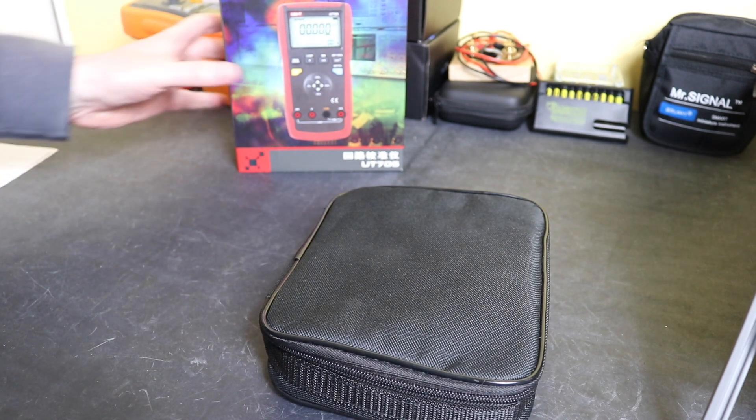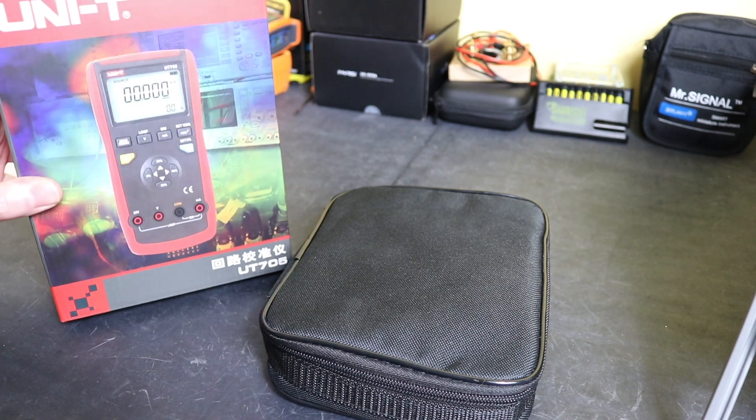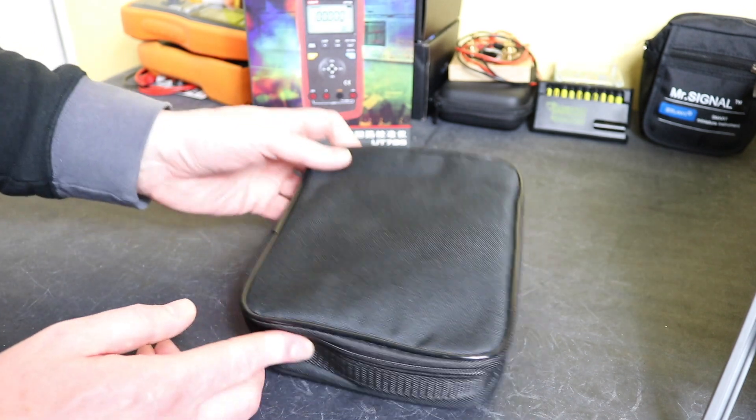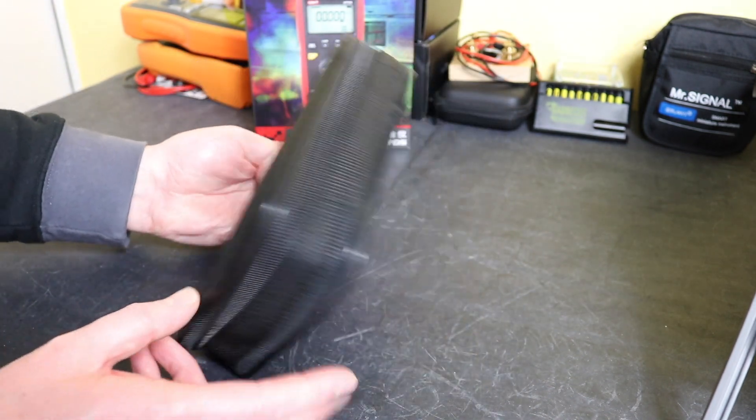You can see it here in front of you. This is the cardboard box that it arrives in, and then inside the cardboard box we have a little canvas bag to keep the meter in.